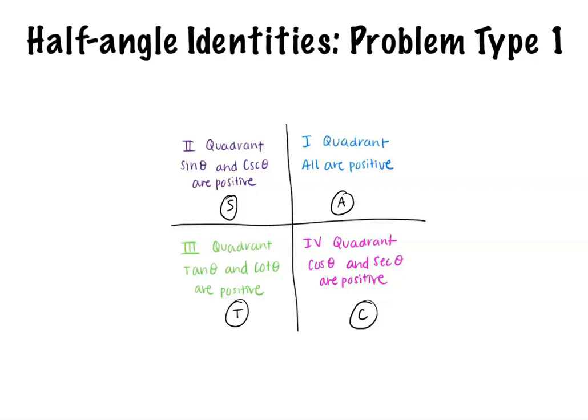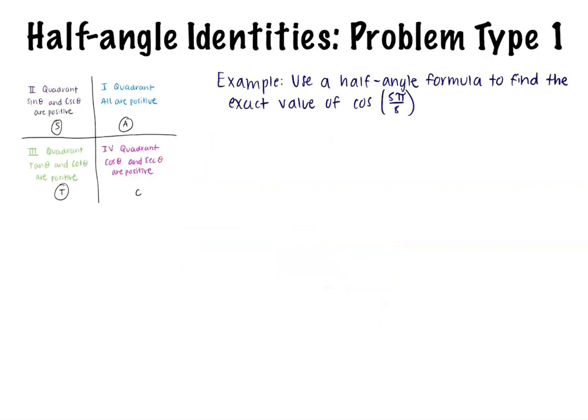Now that we have reviewed the quadrants, let's move on to an example problem. Use a half angle formula to find the exact value of cosine of 5π over 8. To solve this, we will need the half angle formulas.